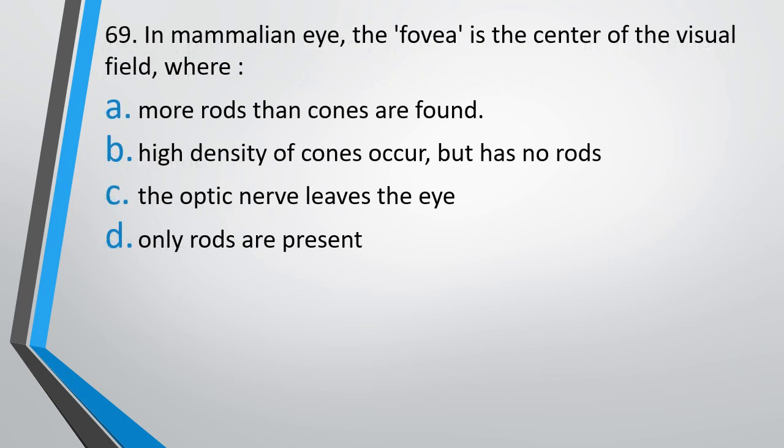Question number 69. In the mammalian eye, the fovea is the center of visual field where: high density of cones are present but there are no rods; the optic nerve leaves the eye; or only rods are present. The correct answer is option B — high density of cones are present but there are no rods.